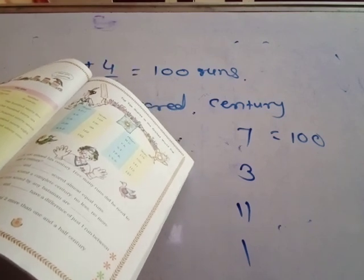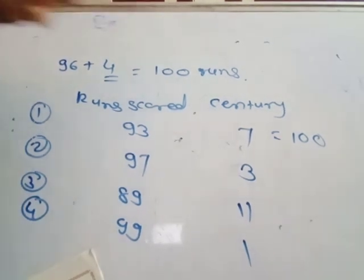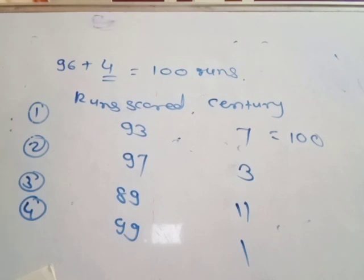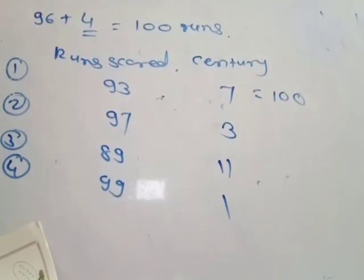Guess how many more to make a triple century? To make a triple century from 206, how many more runs? This remaining part tomorrow. 206... 216... 226. Thank you.